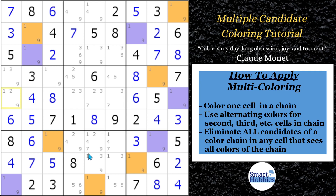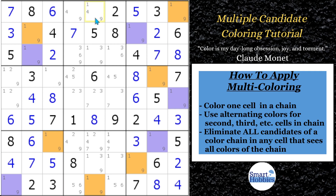Now what you're trying to do is make eliminations. Here's how it works: anytime two opposite colors see a particular cell, you can eliminate both of those candidates from the cell. So anytime a cell sees both an orange and a purple, we can eliminate a one and a nine from that cell, because we know one of these has to be a one and one has to be a nine. For example, these two cells are both orange — since they're the same color, that's not going to help us and we can't make the elimination there.